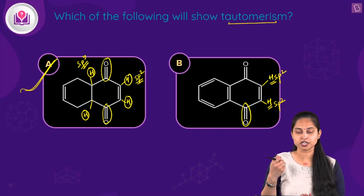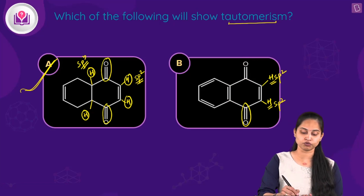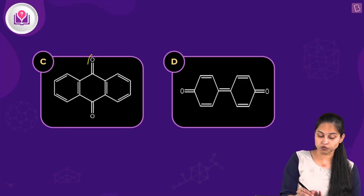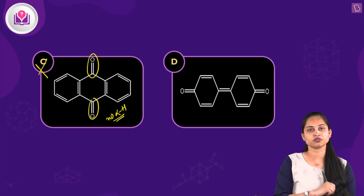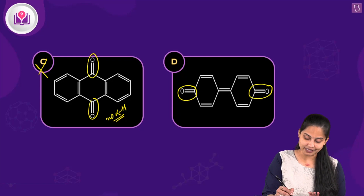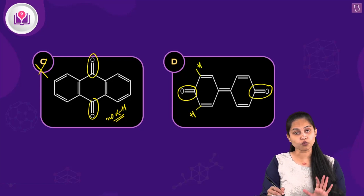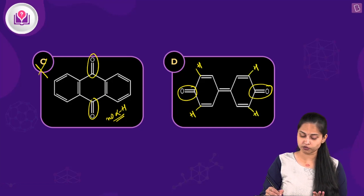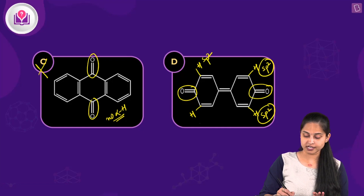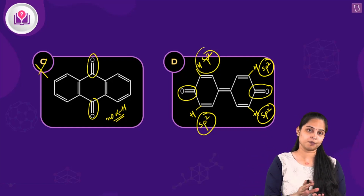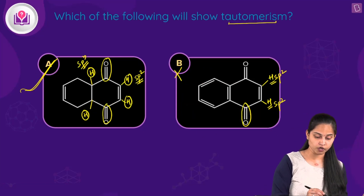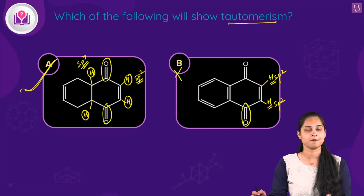In option B, due to the double bond, there is no sp3 alpha-hydrogen atom. Option C also has carbonyl groups but no alpha-hydrogen atoms at all, so it will not show tautomerism. Option D has two carbonyl groups with alpha-hydrogen atoms, but they are sp2 hybridized on sp2 carbon atoms, so they do not participate in keto-enol tautomerism. Only option A is the correct answer.